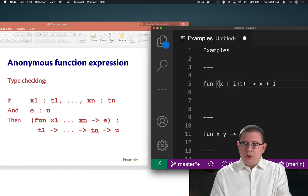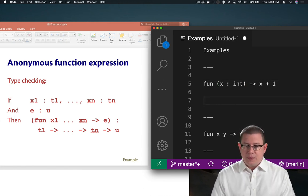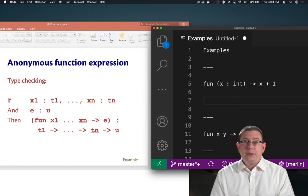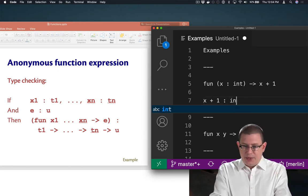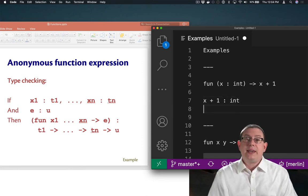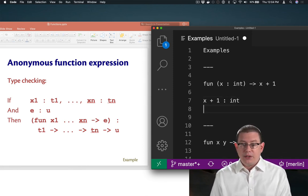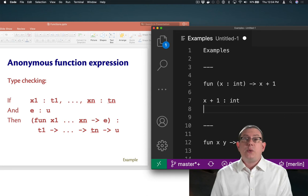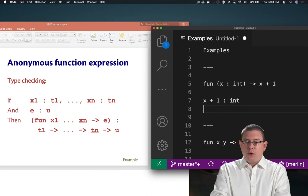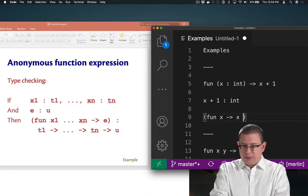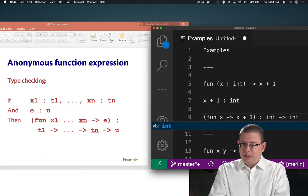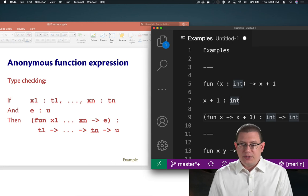Okay, so if we knew that x had type int to begin with here, what would the right hand side of the function expression be? x plus 1 would have type int, of course, because it's the result of taking that plus operator and applying it to two integers. So we know that x has type int, we know that x plus 1 has type int. Therefore, the entire anonymous function expression, fun x arrow x plus 1, would have type int arrow int. The argument type arrow the output type.